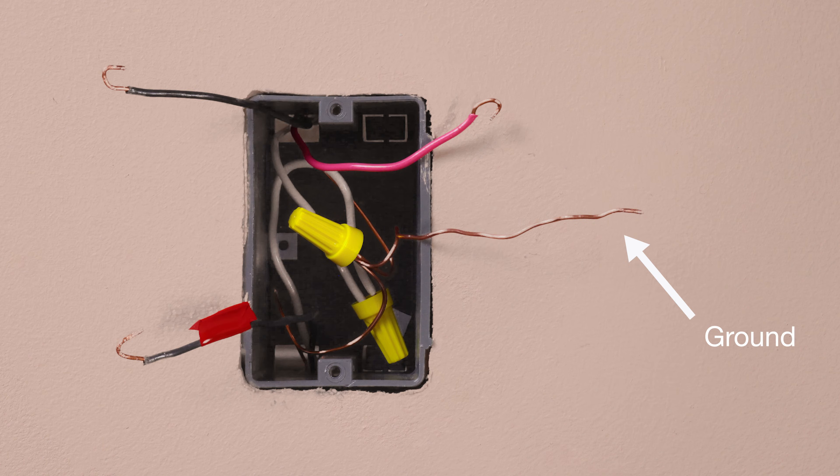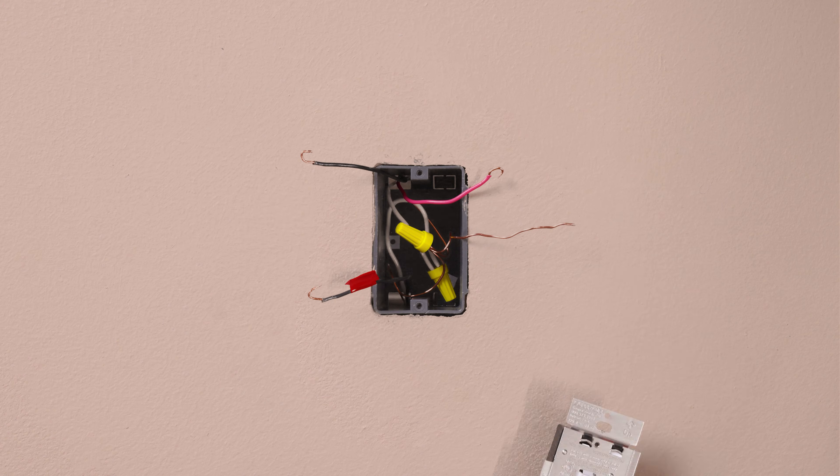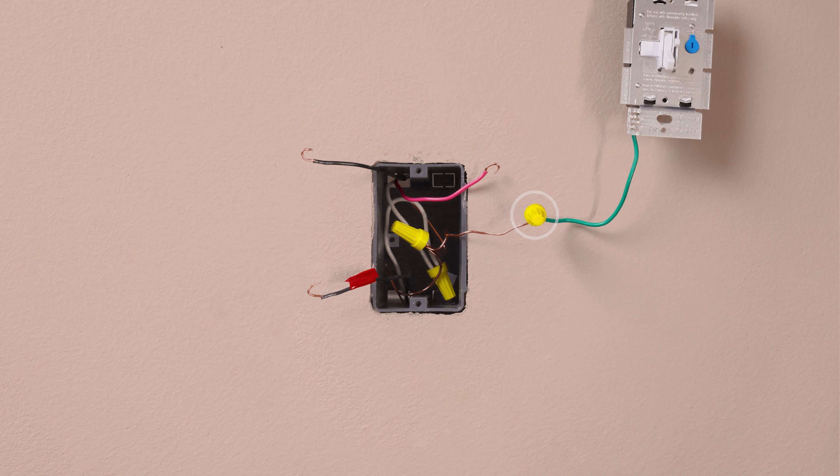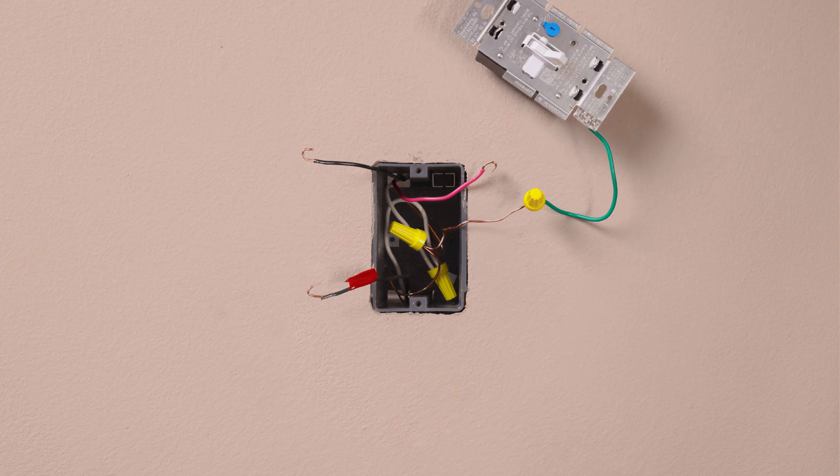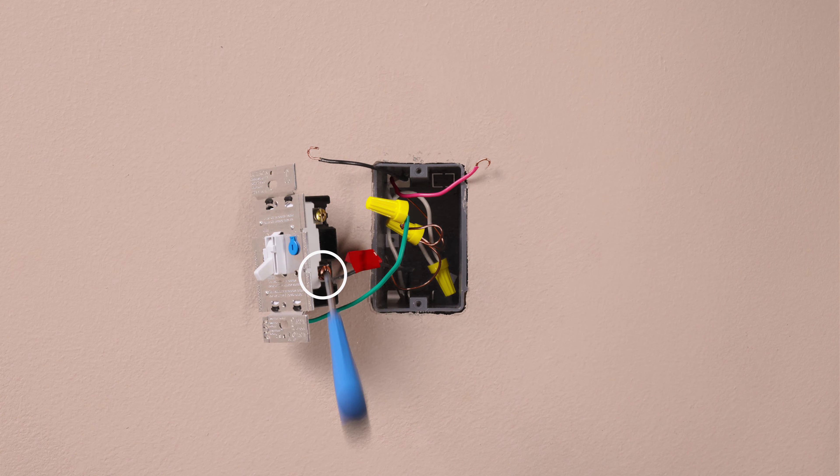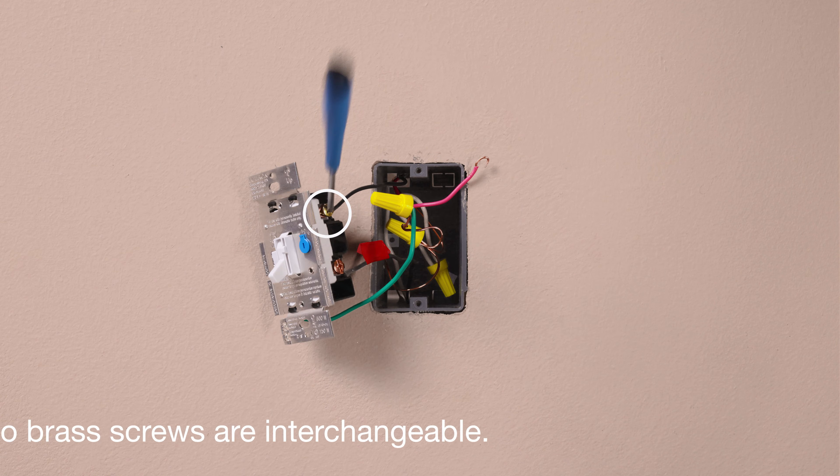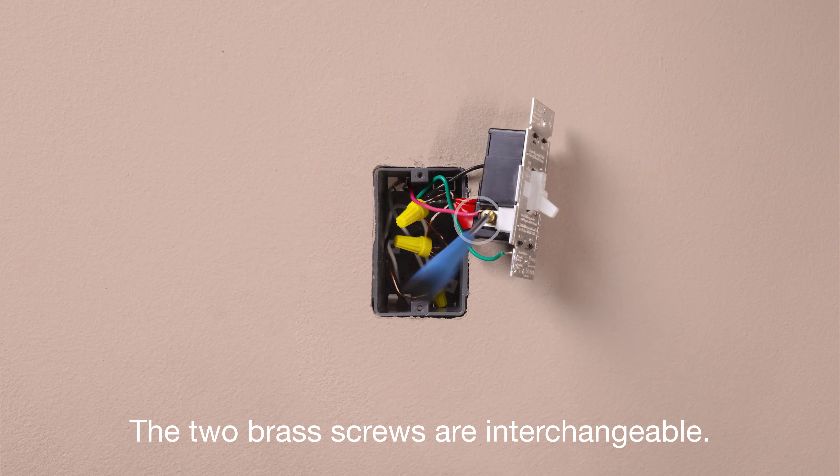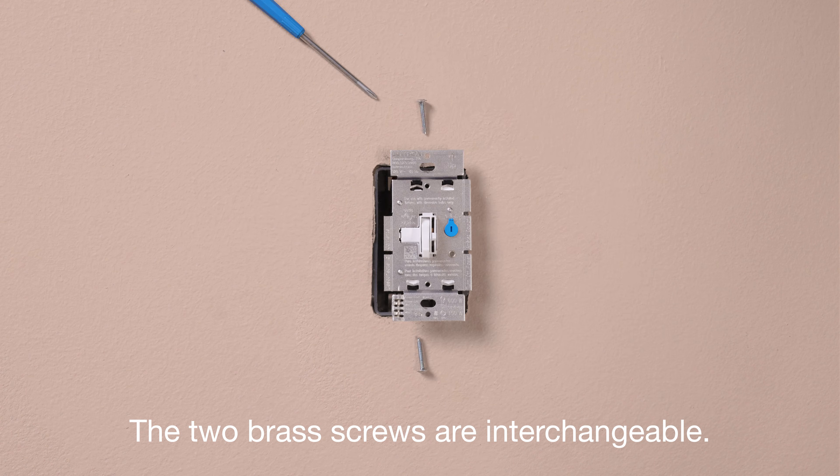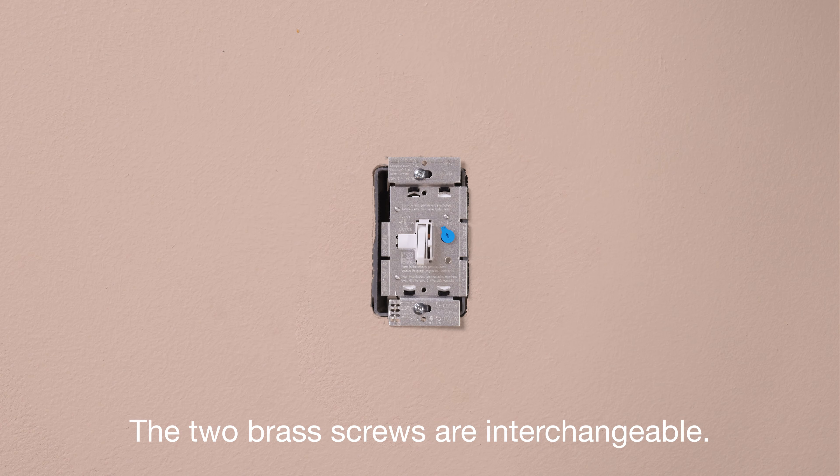Connect the ground wire, typically a bare copper wire, to the green wire on the dimmer. Connect the tagged wire to the copper screw on the new dimmer. Then connect the remaining two wires individually to the two brass screws on the dimmer. They're interchangeable here, so it will not matter which wire connects to each brass screw.